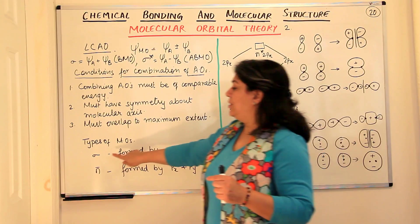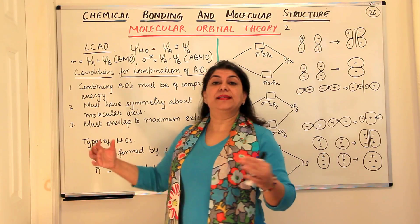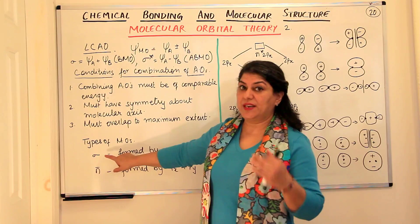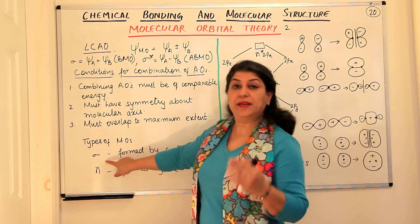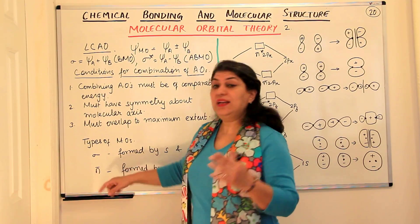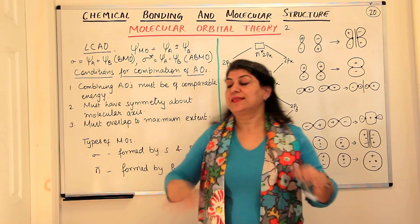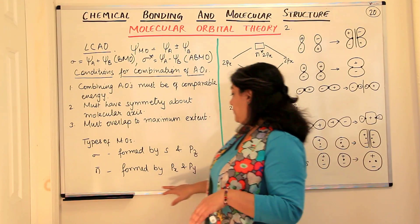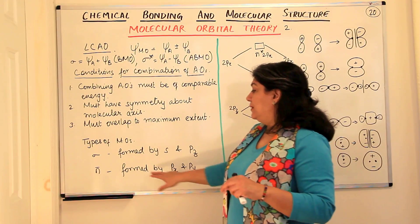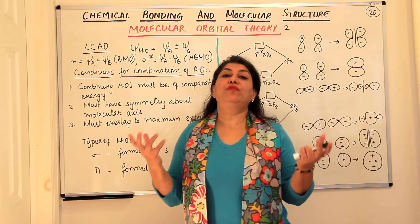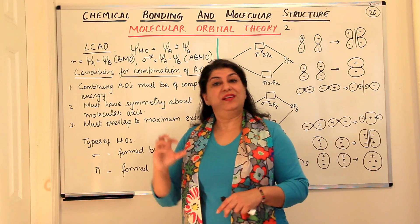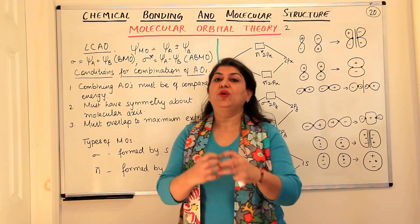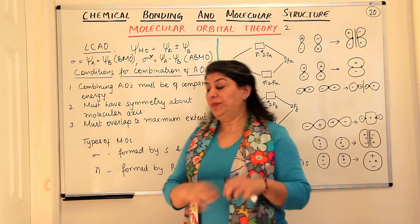When the overlap is head-on, it results in the formation of sigma bonds—we have studied this earlier in the Valence Bond theory. The s orbital would form sigma bonds because it is spherical in nature and the overlap is always head-on, and the pz, which is aligned along the internuclear axis, also forms sigma bonds.